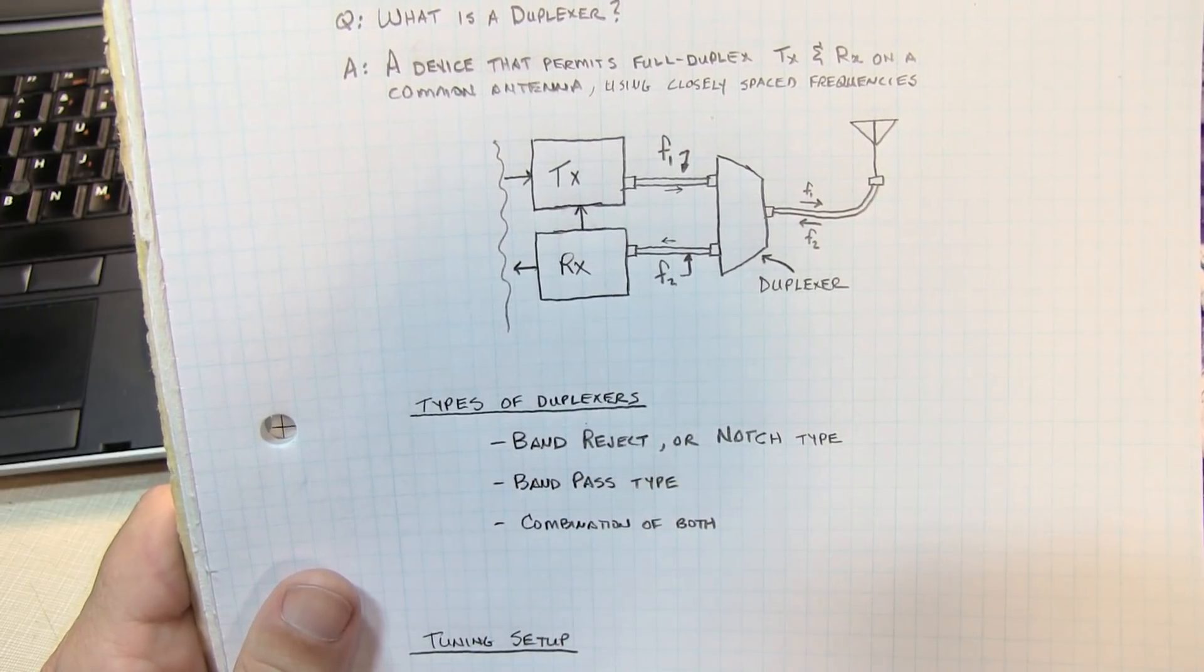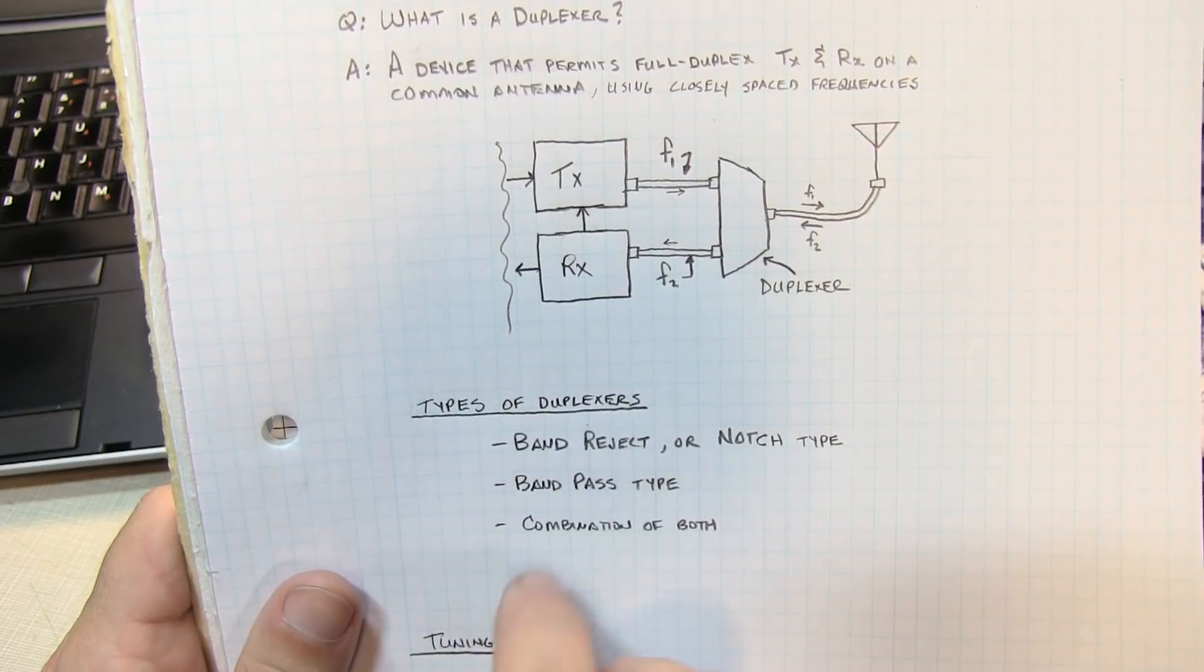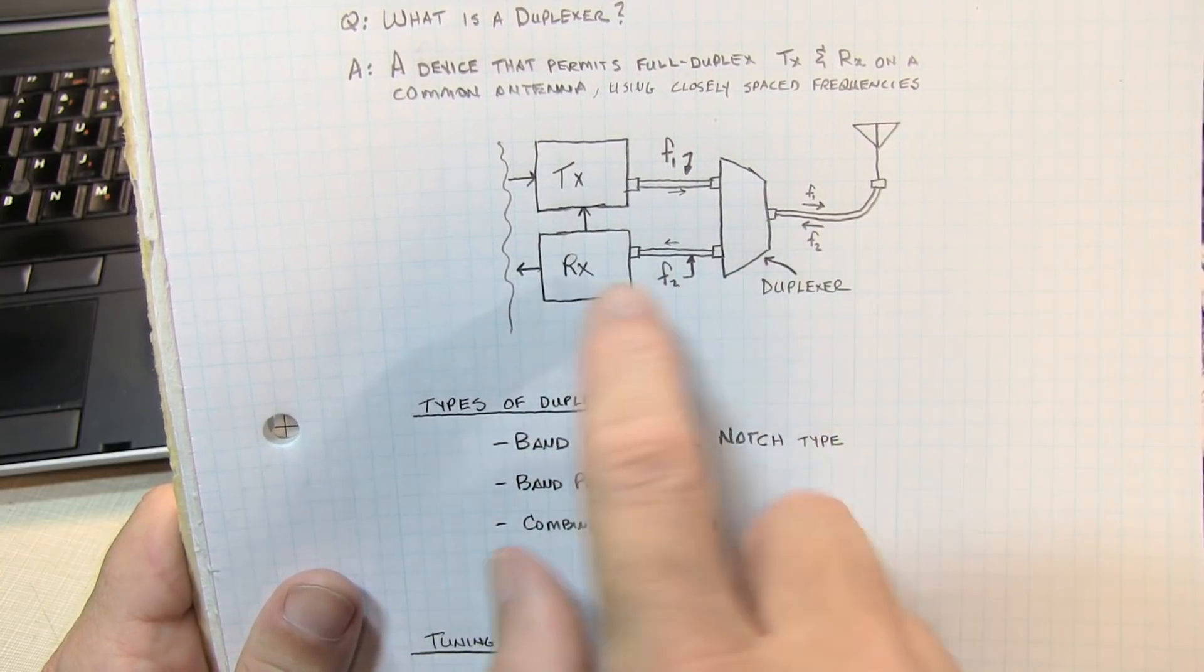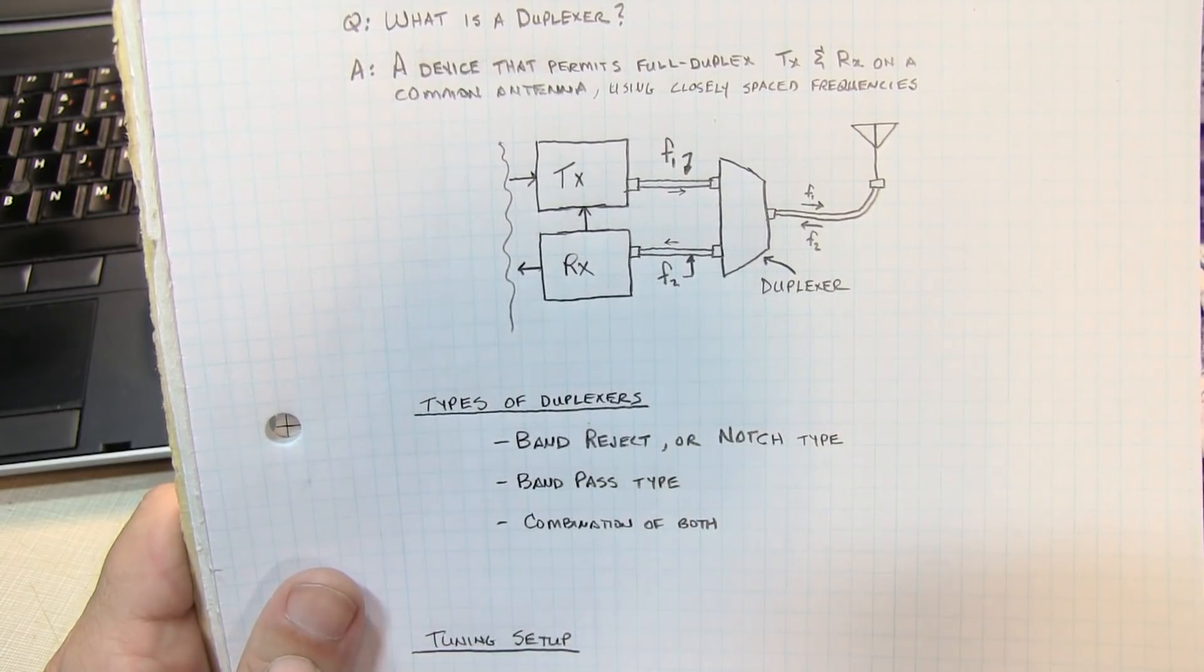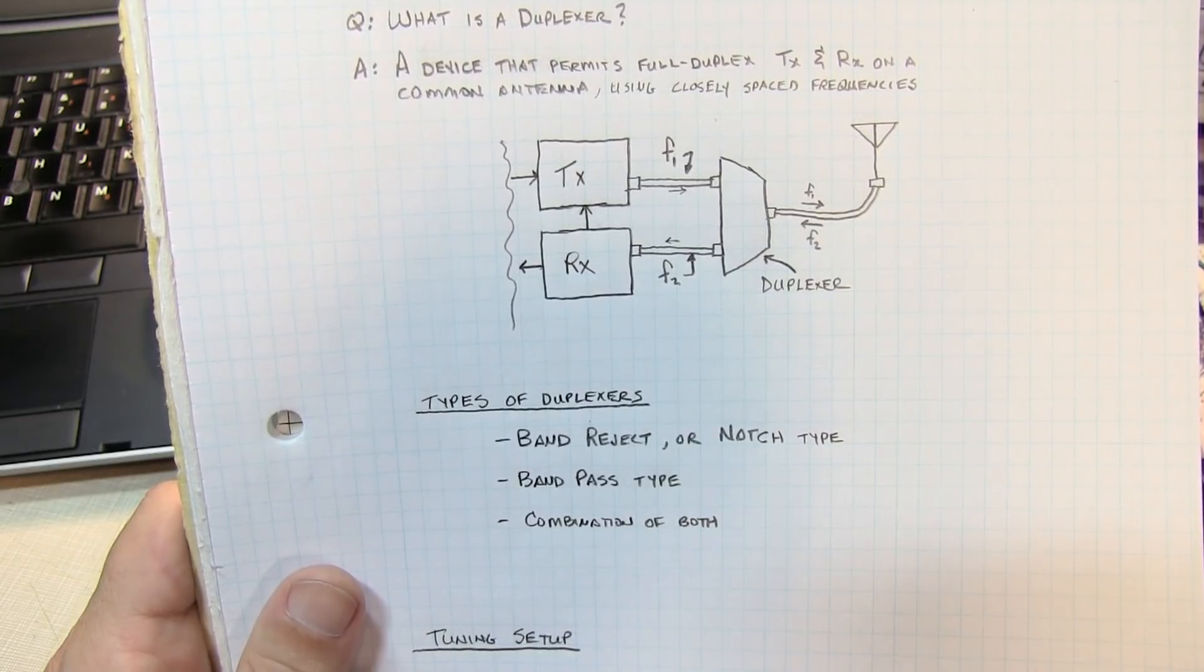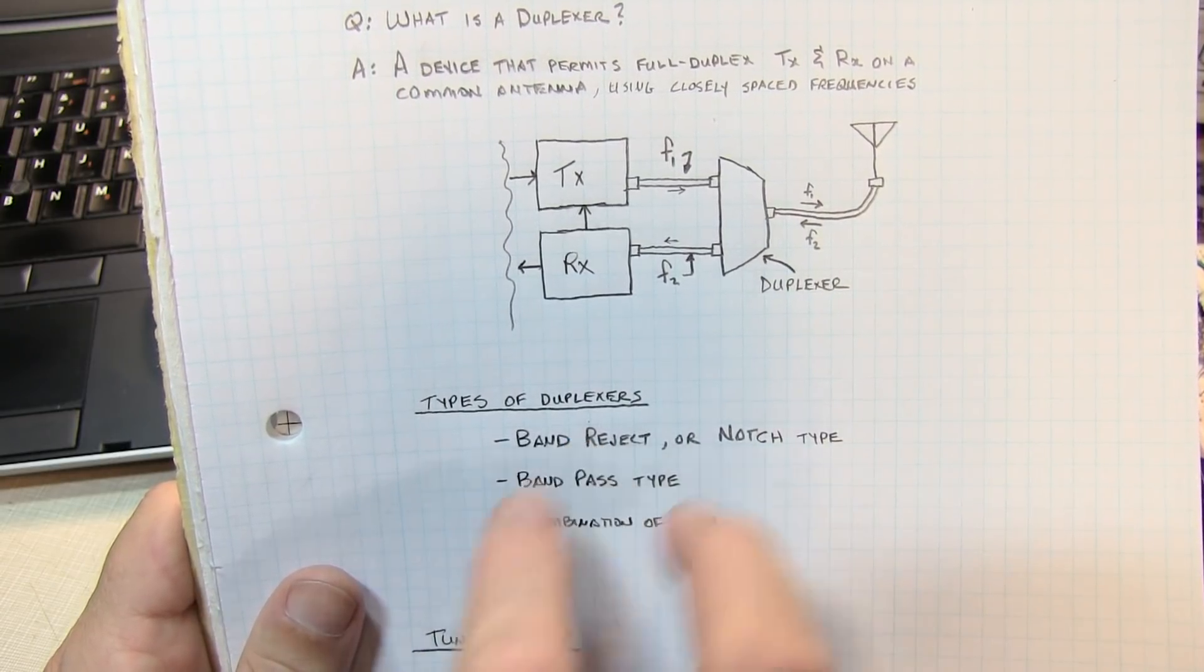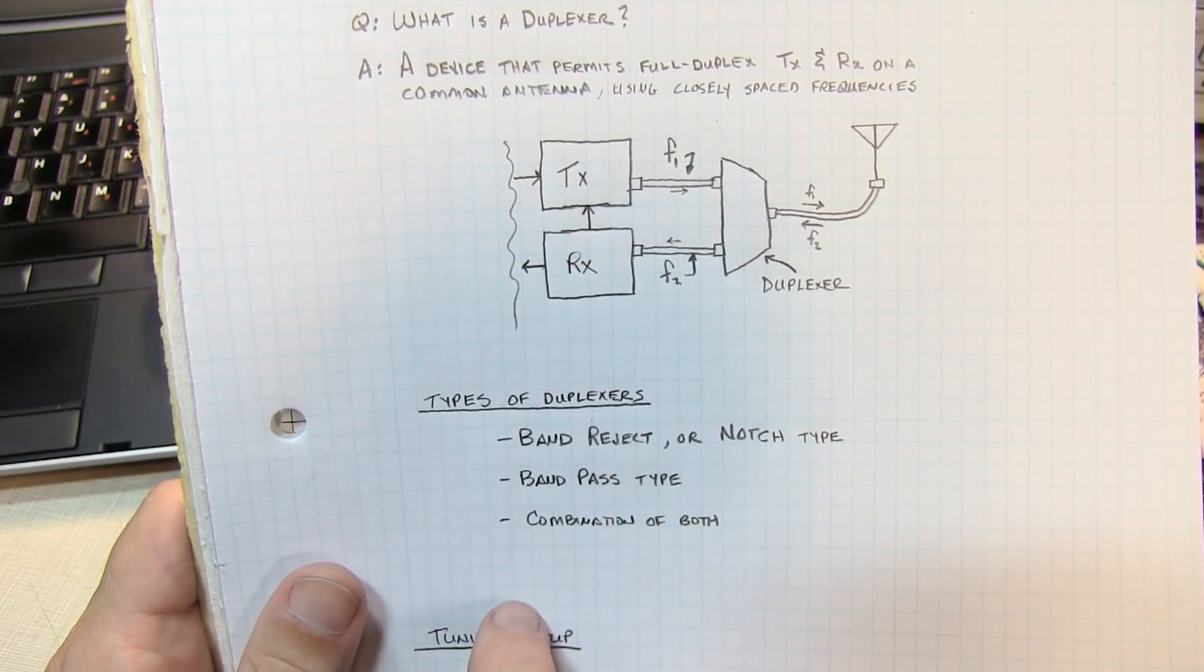The problem with band reject filters is that the pass band characteristics are relatively broad, so if you're working in a dense environment you might allow other signals to get into the receiver that might overload it. So the band reject filter, while it's simple and it's the example I have here that I'm going to demonstrate, it's not the most desirable but it's certainly the easiest to tune, so that's why we're going to use it in this video.